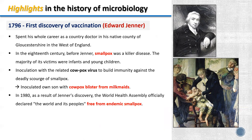In 1796, there was the first discovery of vaccination by Edward Jenner. He spent his whole career as a country doctor in Gloucestershire in the west of England. In the 18th century, before Jenner, smallpox was a killer disease. He inoculated his own son with the cowpox blister from milkmaids, showing that inoculation with the related cowpox conferred immunity against the deadly smallpox. And in 1980, as a result of Jenner's discovery, the World Health Assembly officially declared the world free from endemic smallpox.